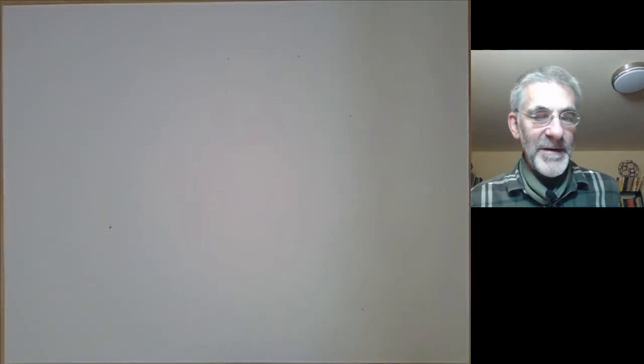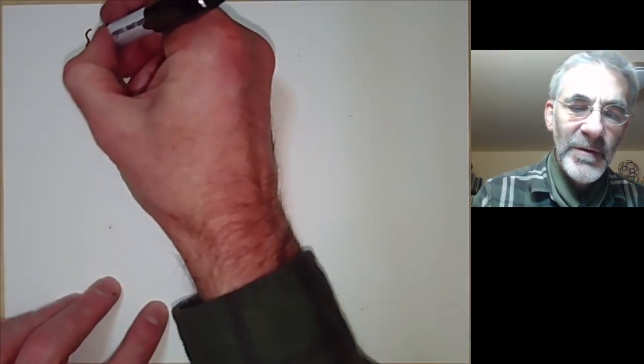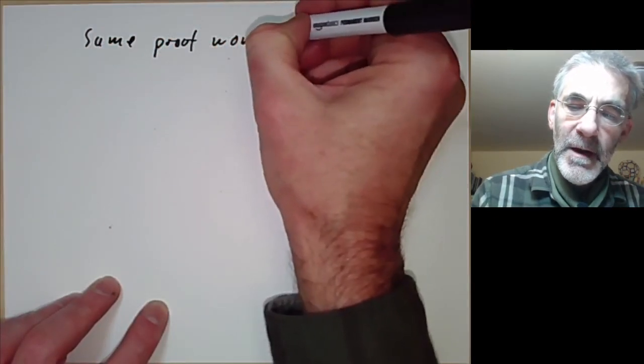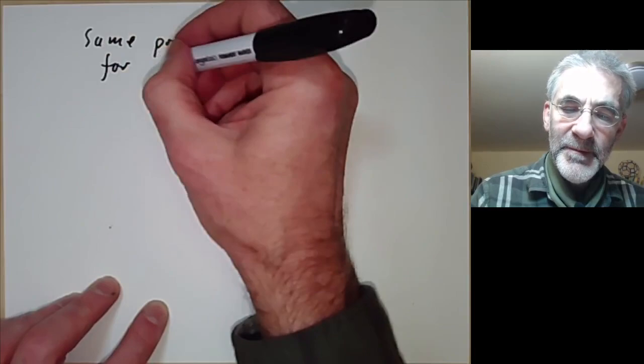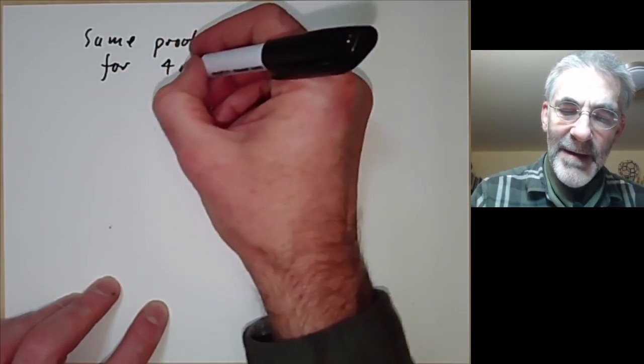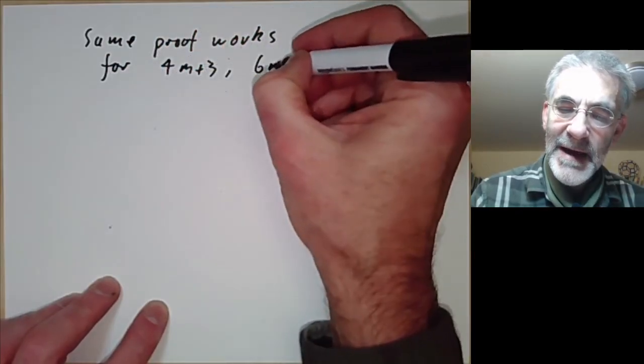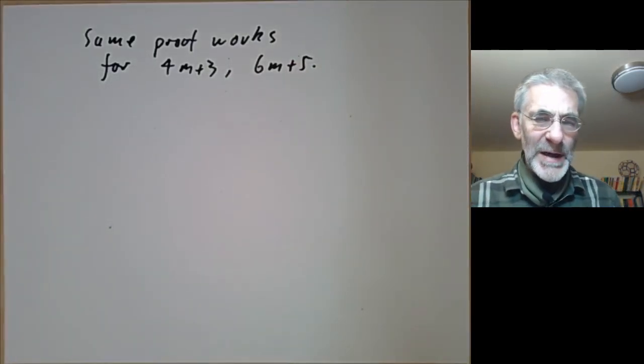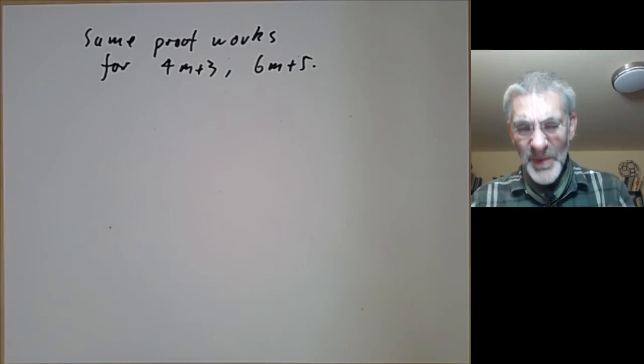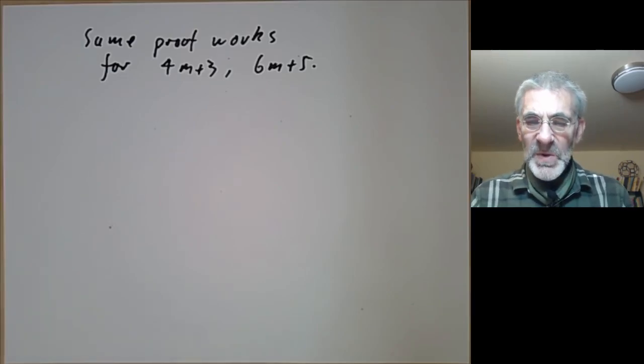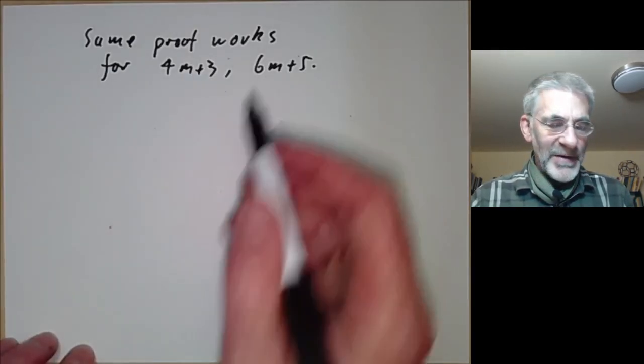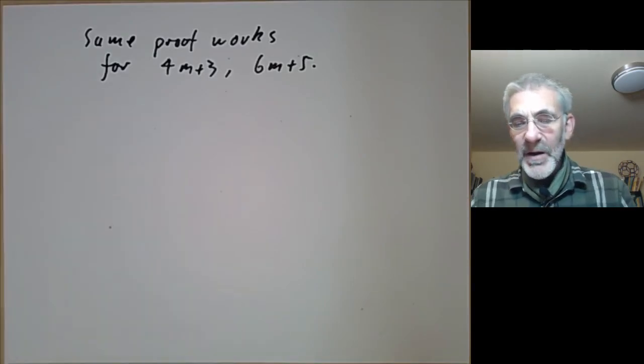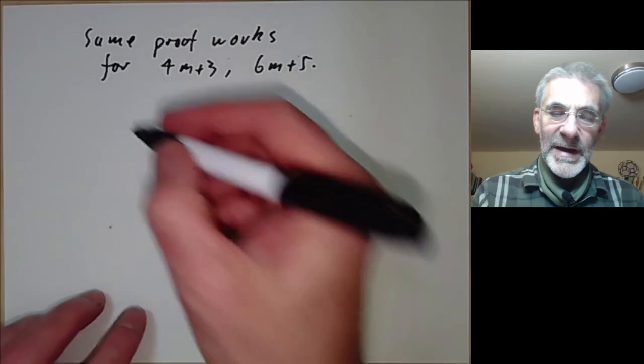Well how much further can we push this? Well the same proof works for primes of the form 4m plus 3 or 6m plus 5. But beyond that it doesn't really, I mean it doesn't seem to work for any other arithmetic progressions at least not in any easy way. You can go a bit further by using more complicated arguments.